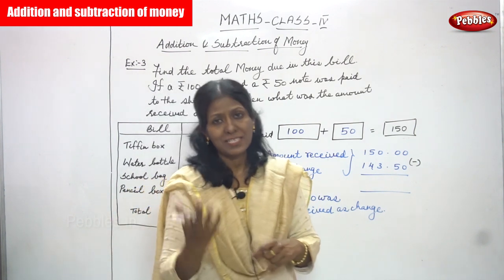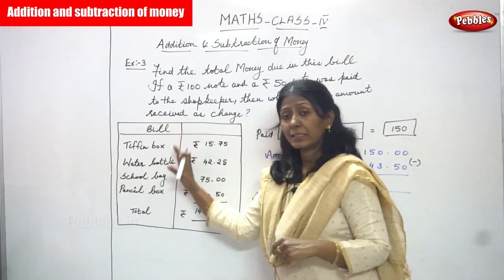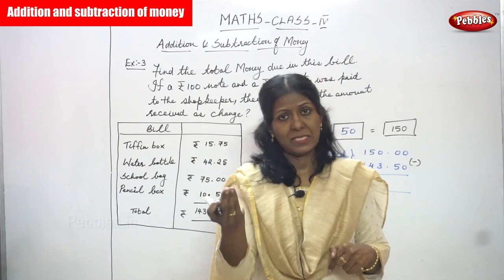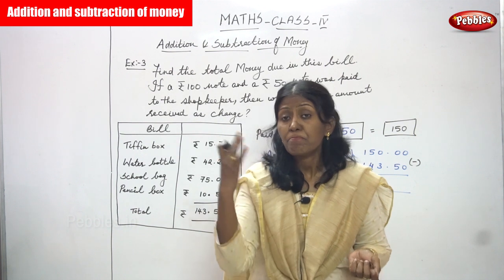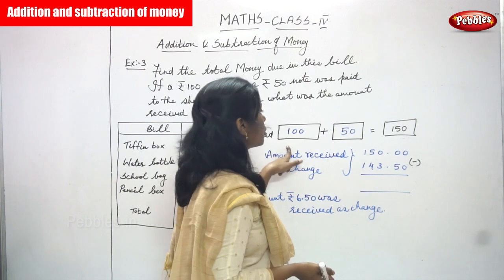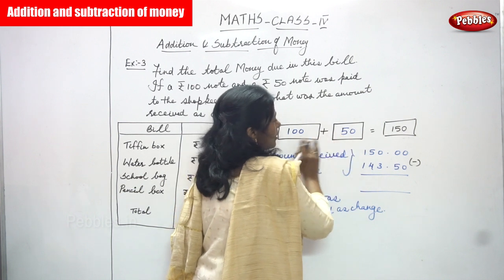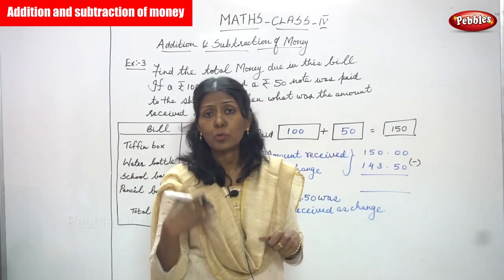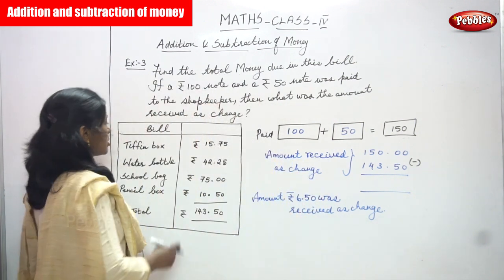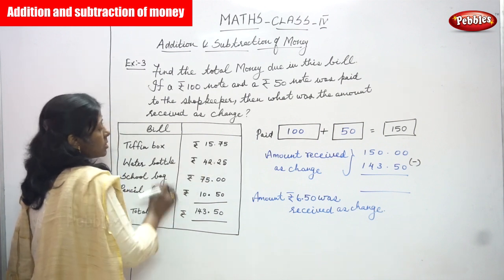The person went to the shop and bought some things. He already paid 100 rupees note and 50 rupees note — combined together that is 150 rupees totally. First we have to check the bill amount, so now we are going to add all the things.